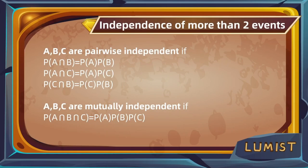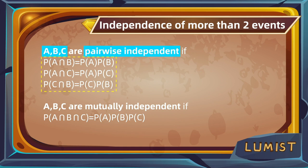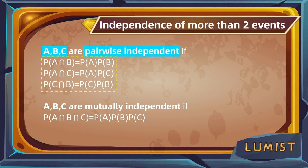Independence can also be defined for more than two events, and for that we have two types. We say three events A, B, and C are pairwise independent if for any pair of two events among them, the independence condition holds — so all three pairwise equations hold. The other type is called mutually independent, which requires the probability of the intersection of all three events together to equal the product of each of the individual event probabilities multiplied together.